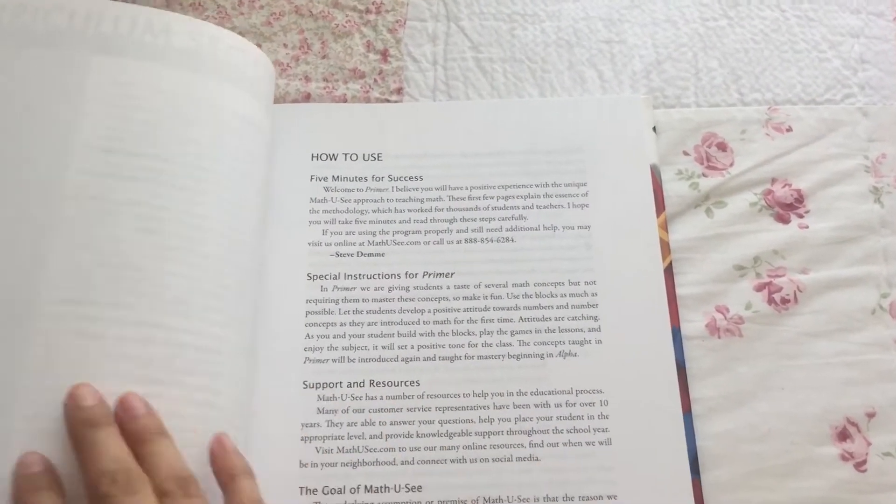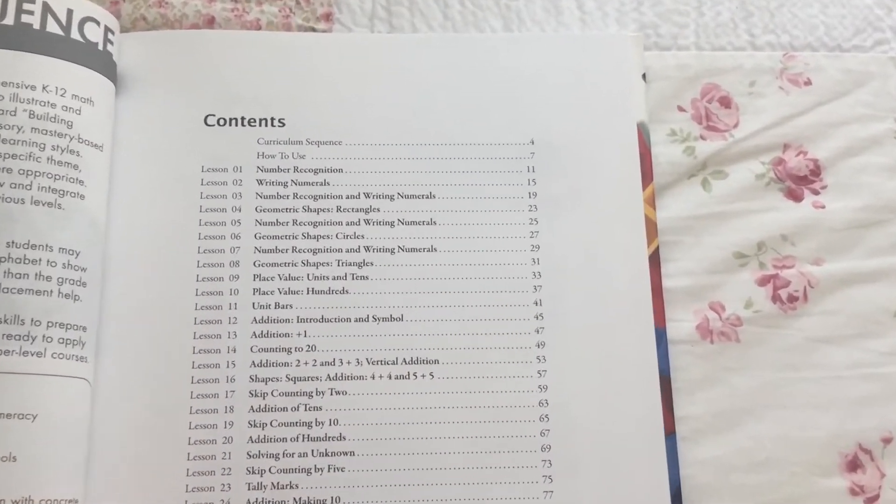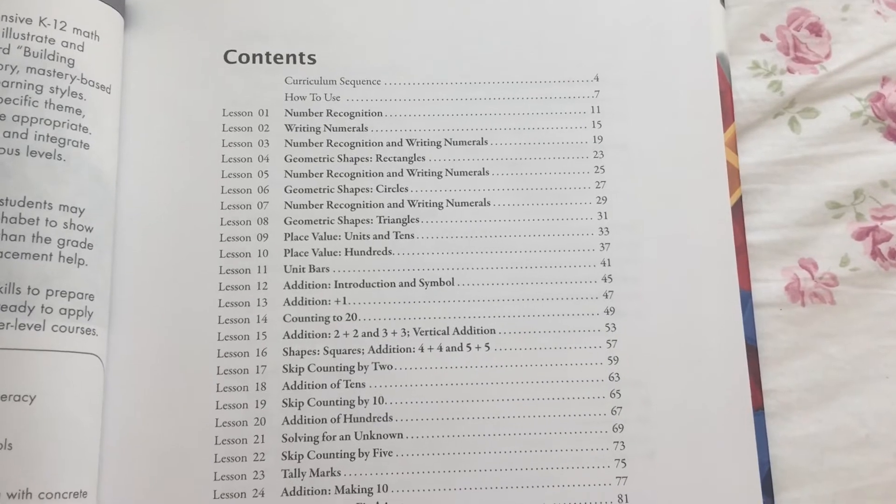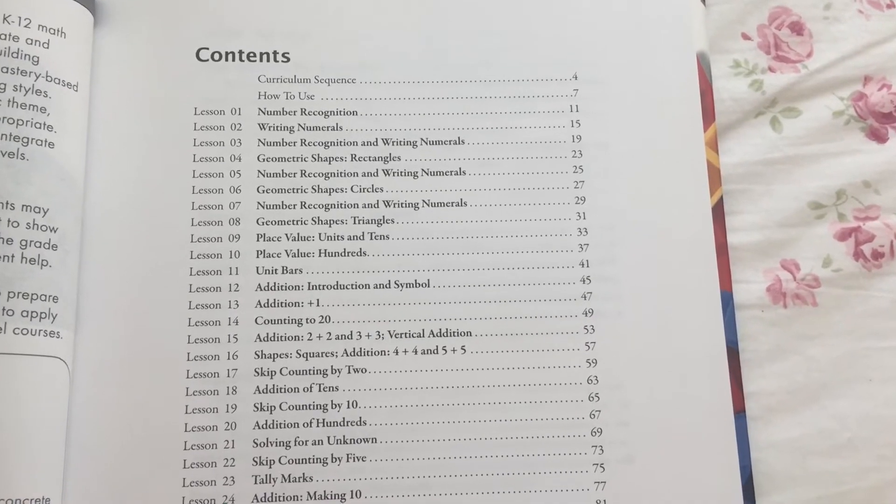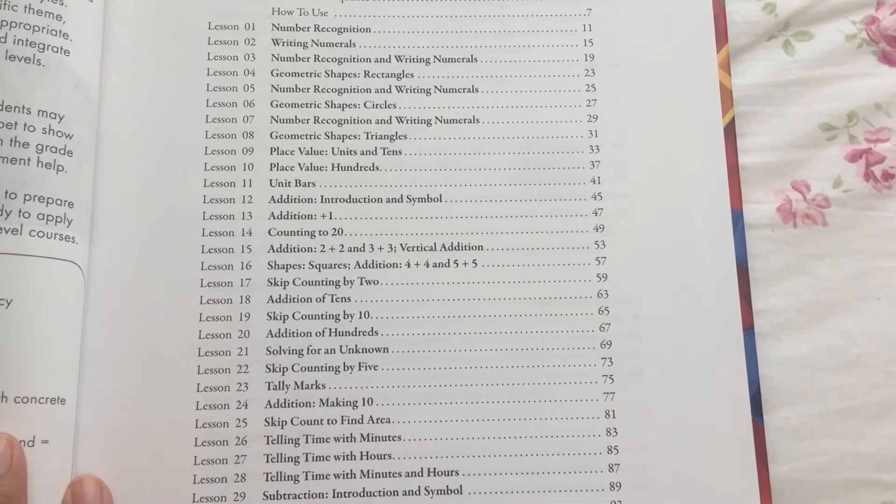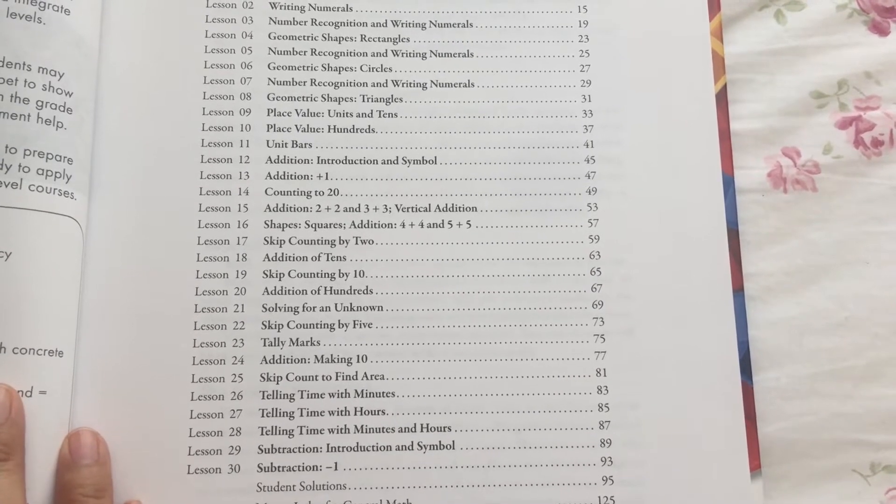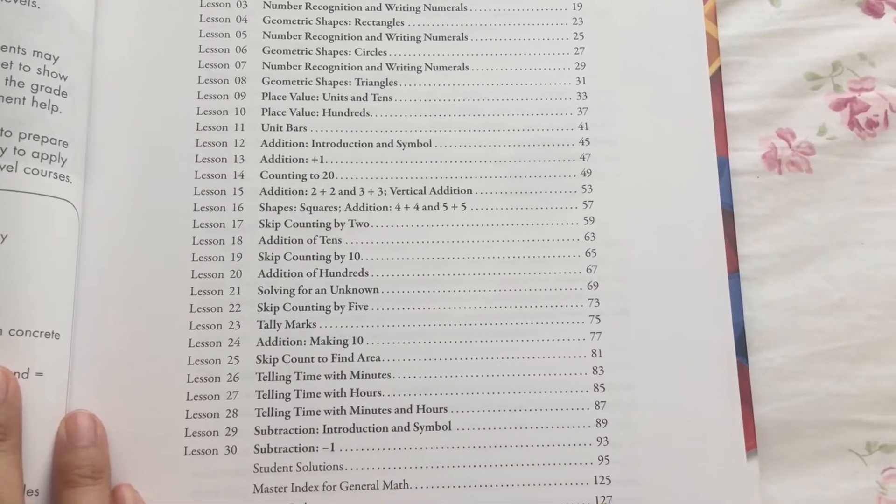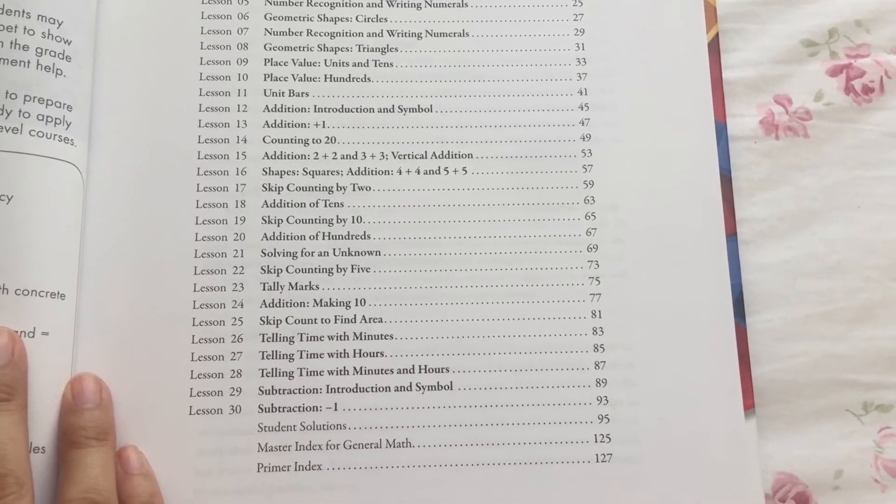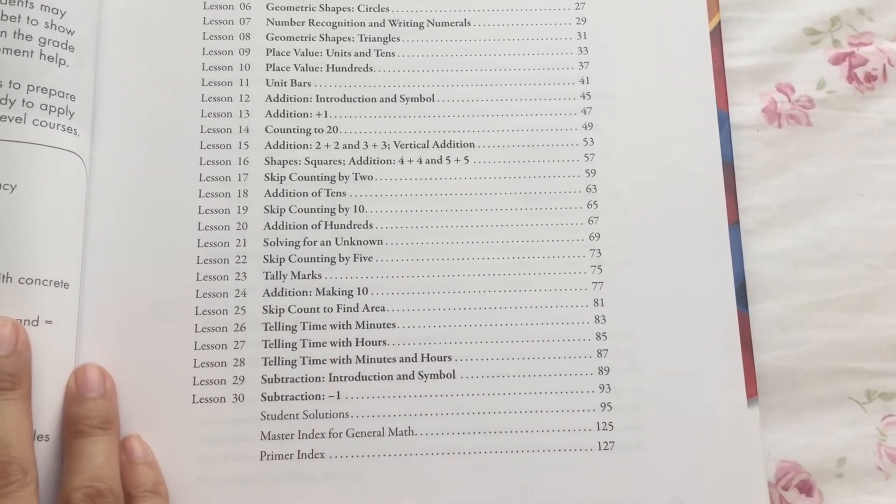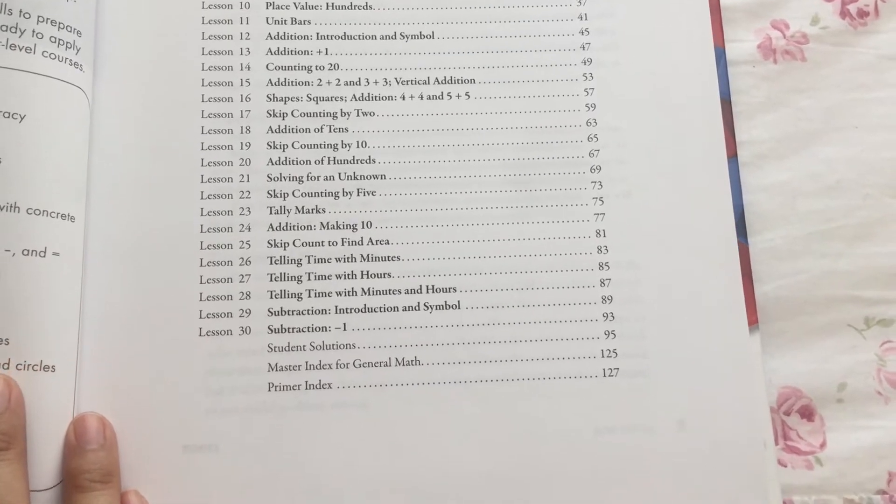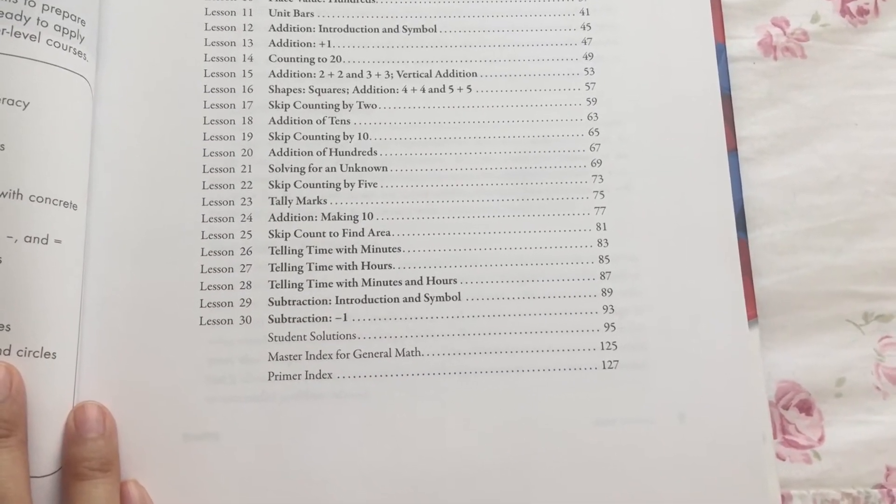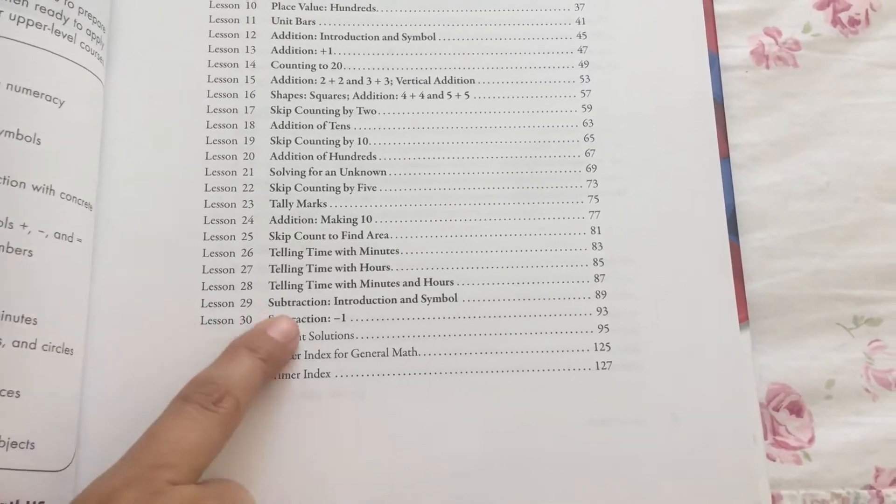We used Primer in kindergarten. In the table of contents it tells you the things the kids will be learning: numbers, writing numbers, recognizing numbers, shapes, place value, addition, counting to 20, skip counting by 2, skip counting by tens, addition of hundreds, solving for the unknown, more skip counting, tally marks, and then at the end it teaches time and subtraction also.